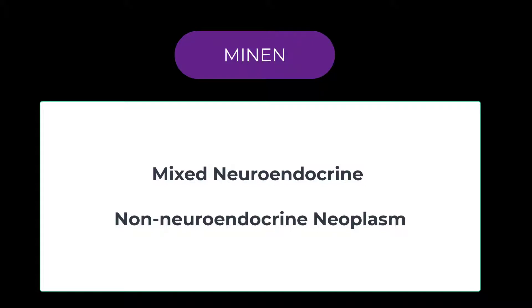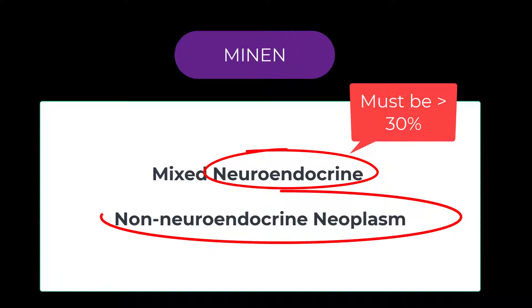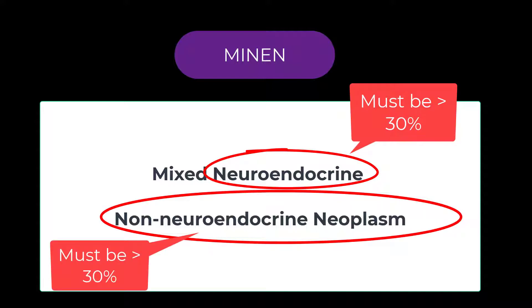MiNEN is Mixed Neuroendocrine Non-Neuroendocrine Neoplasm. To call something MiNEN, a third of it needs to be neuroendocrine, and at least a third non-neuroendocrine — either adenocarcinoma or squamous cell carcinoma.